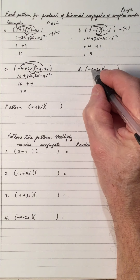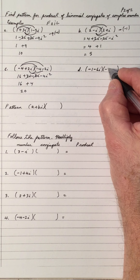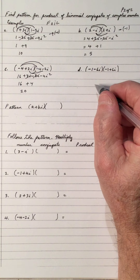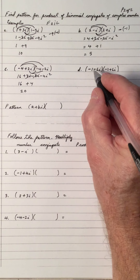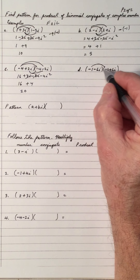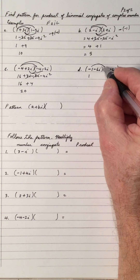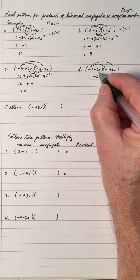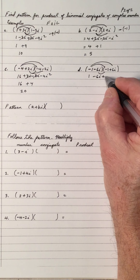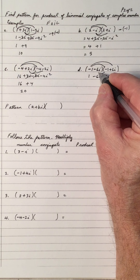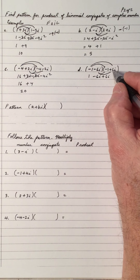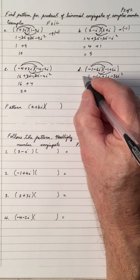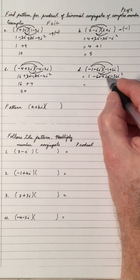The conjugate of negative 1 minus 6i is negative 1 plus 6i. You can tell you've done the conjugate correctly if the middle terms cancel. First is 1, outside is negative 6i, inside is positive 6i, and last is negative 36i squared. The middle terms cancel out.